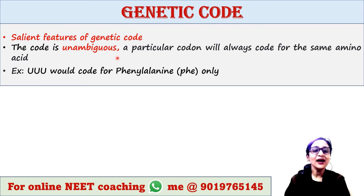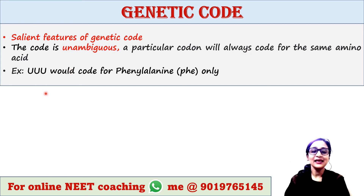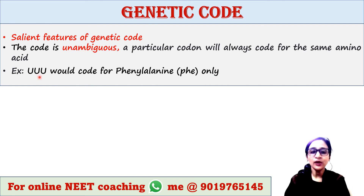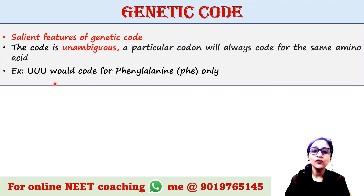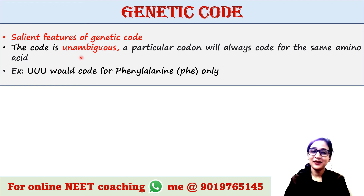The code is unambiguous. A particular codon will always code for the same amino acid. For example, UUU will code for phenylalanine only — it cannot code for any other amino acid such as serine or methionine. It would code for phenylalanine only. So the code is unambiguous.